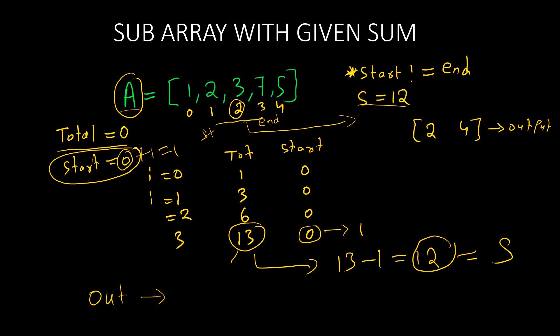We can now return the indexes and provide them to the output. The output is index plus one. Start is one, so one plus one gives us position two. The ending value is the current index three, and three plus one gives us position four. So the output matches the required answer. If you still have doubts, let's go into the coding section — after seeing the code it will be very clear how we approached this question.